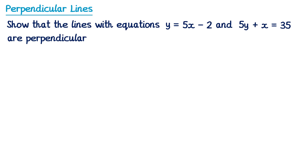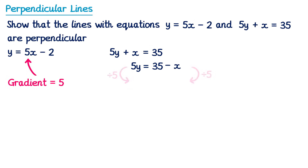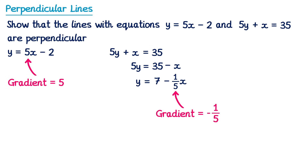So let's find the gradients of these two lines. The first line is quite easy — the gradient is just 5, since it's written in the correct form y equals mx plus c. The second line isn't, so we're going to rearrange it first. We subtract x from both sides: on the left this leaves 5y, and on the right 35 minus x. Then we divide both sides by 5. On the left, 5y divided by 5 is just y; on the right, 35 divided by 5 is 7, and negative x divided by 5 is negative one fifth x. Now we can see the gradient of this second line is negative 1 over 5. Multiplying 5 and negative one fifth together gives negative 1, so therefore these lines are perpendicular.